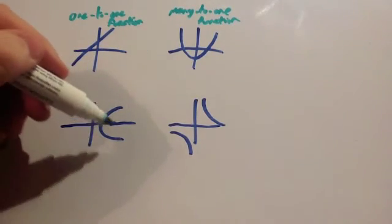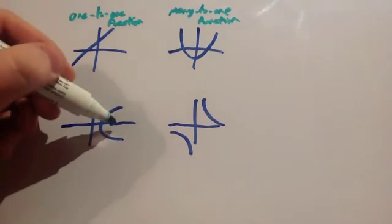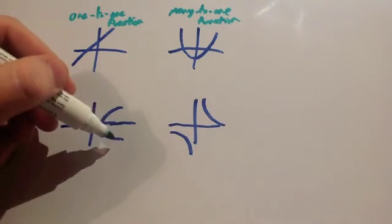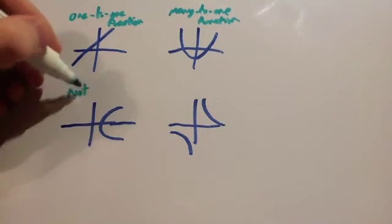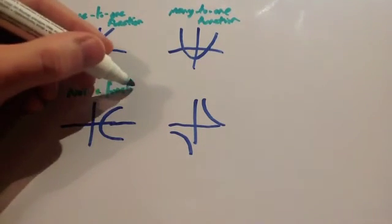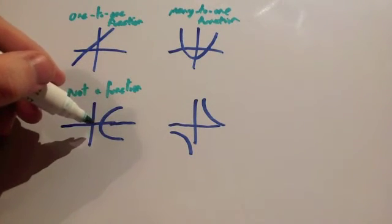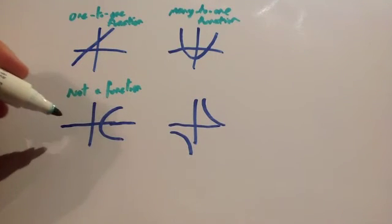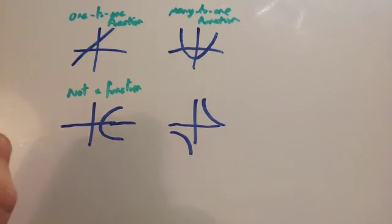This graph here — any graph that goes back on itself, looping around — won't be a function. The reason is you can't have one particular input going to two different heights, two values in the range. That would be a one-to-many, which isn't a function. Also, all these negative numbers along here don't map to anything — they don't go across to any value of the range. Remember the definition of a function: every value of the domain must be mapped to exactly one value of the range.